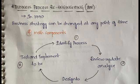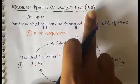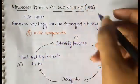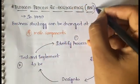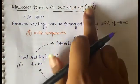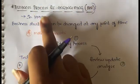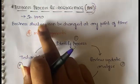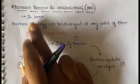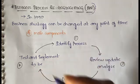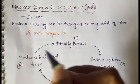First, business process re-engineering — in short it is also called BPR. This BPR was invented, or formulated, in the year 1990.